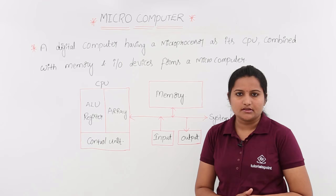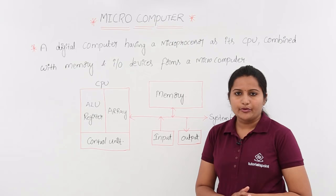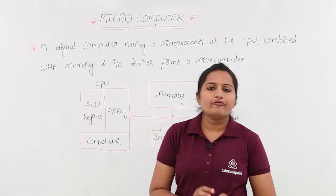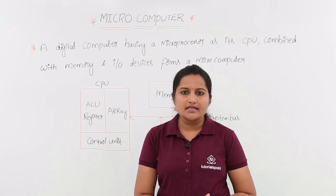In the monitor you can see all the output data coming from the computer. Finally, a microcomputer is nothing but a digital computer with a microprocessor as CPU, along with some input and output devices and memory. This is about the microcomputer.